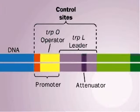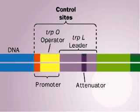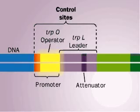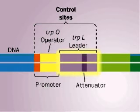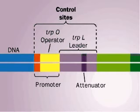Now let's look at the control sequences for the tryptophan operon. They include a promoter — the binding site for RNA polymerase — an operator, which overlaps the promoter, and a leader gene, trpL, which has an attenuator sequence, which we'll also look at soon.